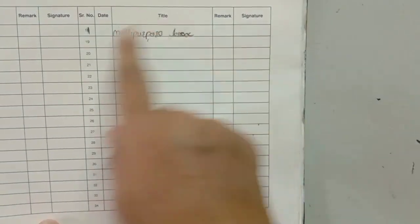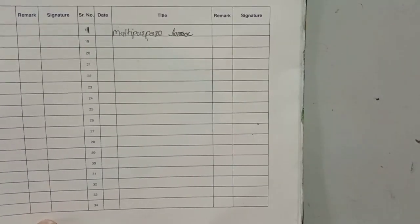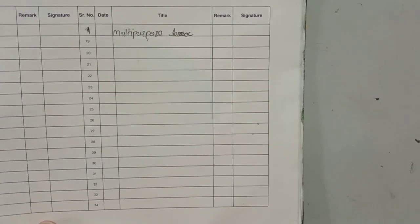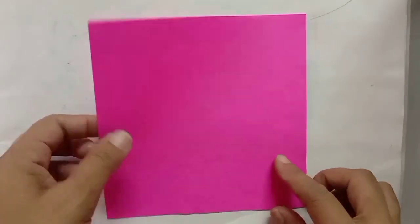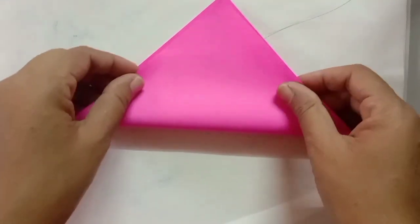Very first you have to open the index page. Here you have to write number one: multi-purpose box. And then you have to open a new page. Left side page: date and topic. Right side page: background.